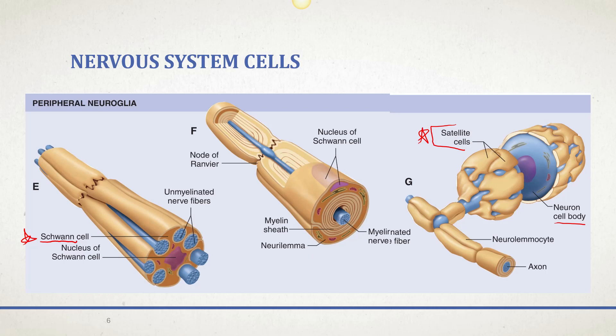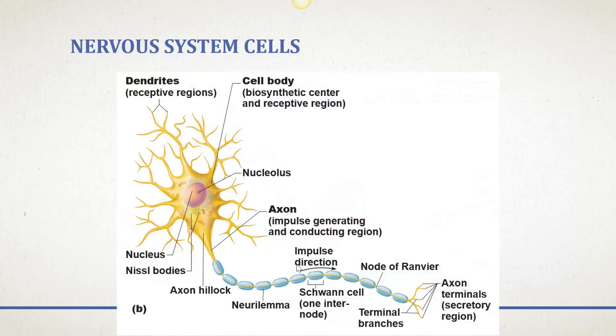Imagine taking an egg, cracking it open in a frying pan, and frying it sunny side up. Now imagine trying to wrap that sunny side up egg around a pencil. If you wrap it around, it'll be all nice and tight, but then the nucleus — like the yolk of the egg — is going to bulge out. That's what the neurolemma really is.